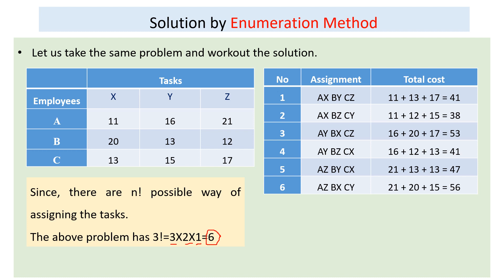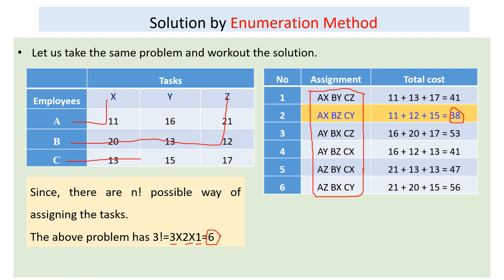Having listed all six possible ways, the next step is to select the one which requires the minimum amount of cost. The totals are 41, 38, 53, 41, 47, and 56. Among these, 38 is the smallest time required to accomplish the tasks. This combination means A to X, B to Z, and C to Y — this assignment requires only 38 units of cost.